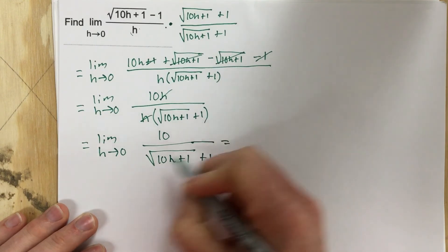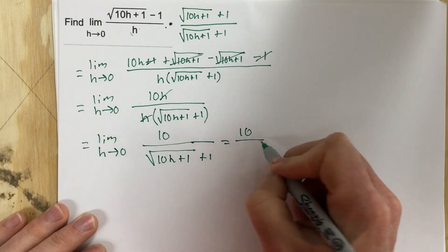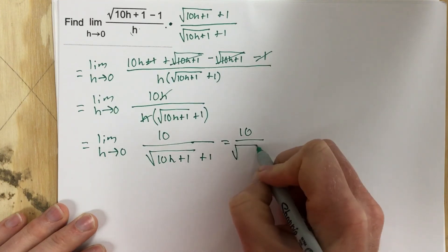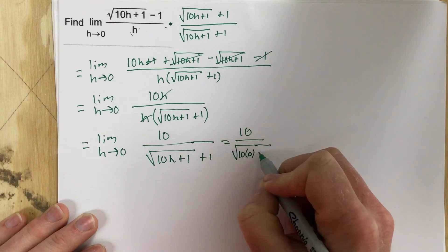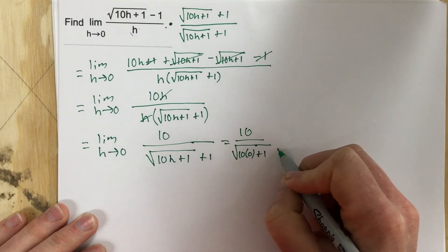Now I'm actually going to plug the 0 in. And I get 10 over root 10 times 0 plus 1 plus 1.